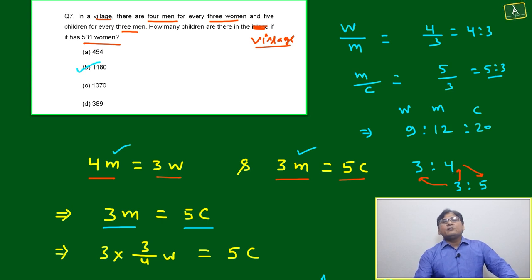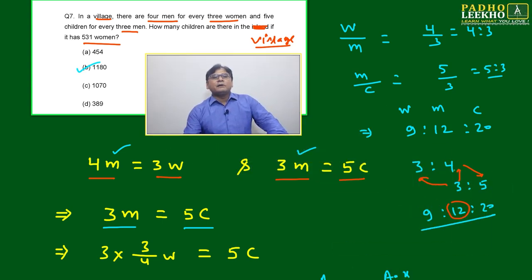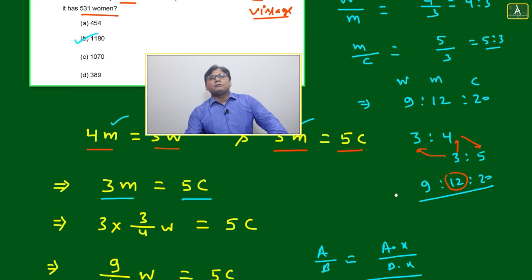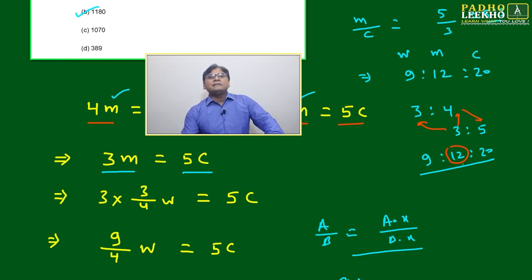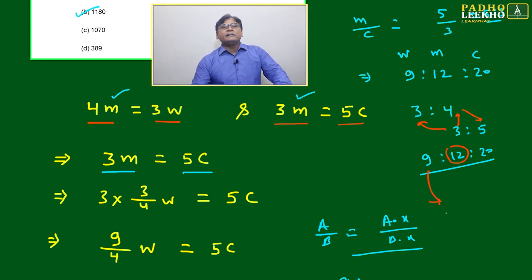The simple method is there - you just multiply 4 into 3 it will become 12, you just multiply 3 into 3 it will become 9, and you just multiply 4 into 5 it will become 20. Means the ratio of women, men and children will become 9 ratio 12 ratio 20.